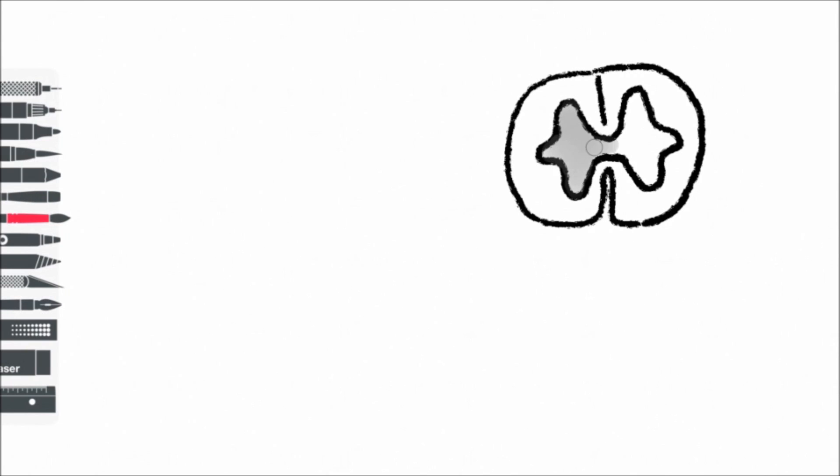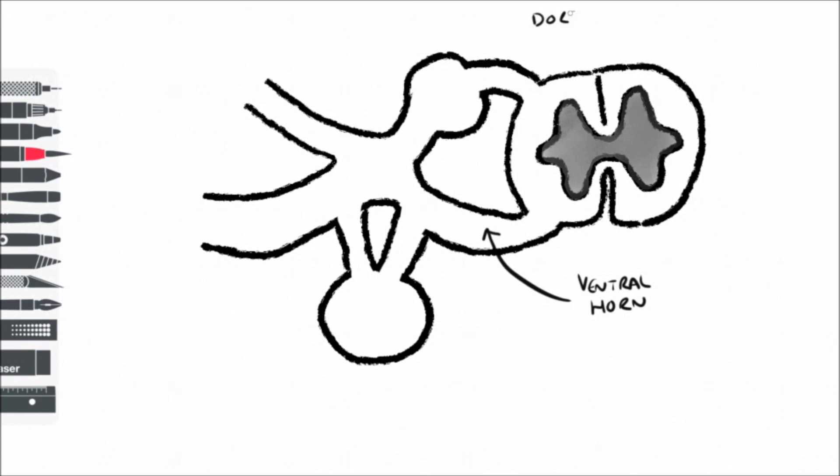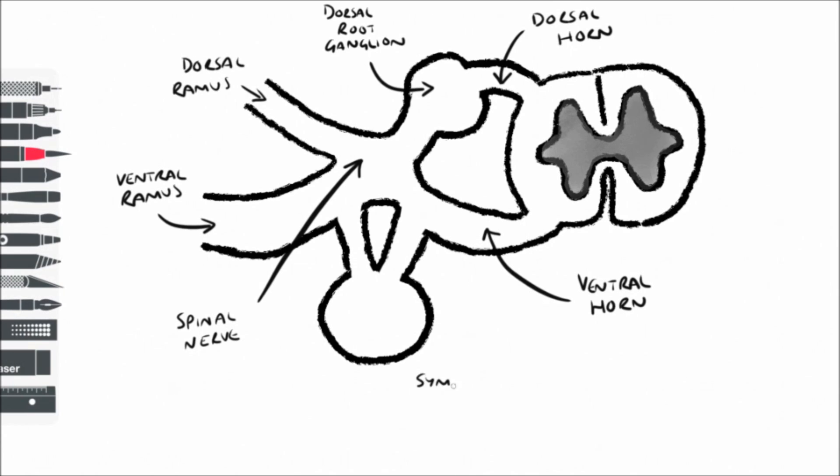So here if we take a cross-section of one spinal cord section, somewhere in between T1 and L2, off of the anterior surface of the spinal nerve, we can see a cross-section of one paravertebral ganglia. So remember that this is part of this chain, the sympathetic chain, and so it will be continuous with the ganglion above and the ganglion below.